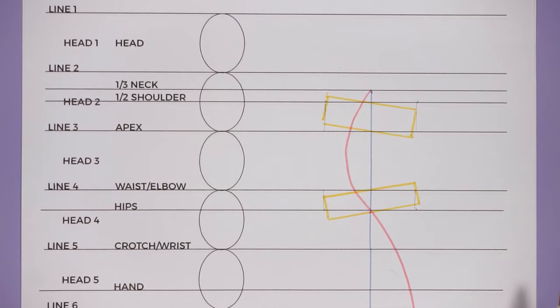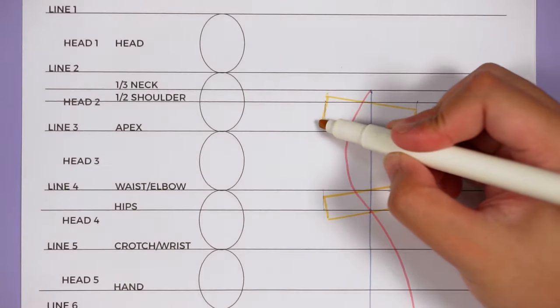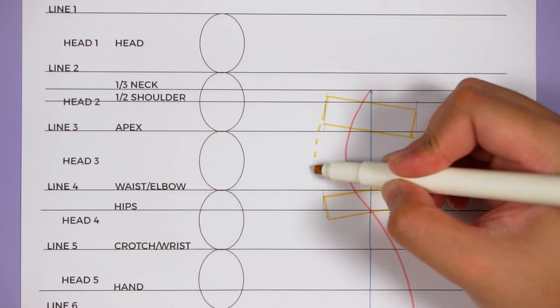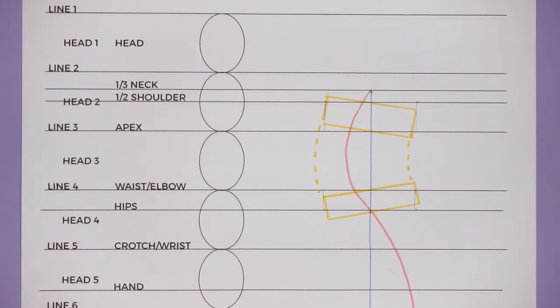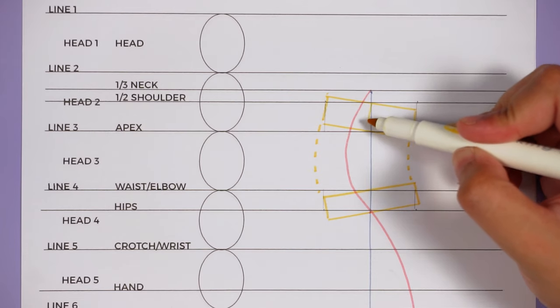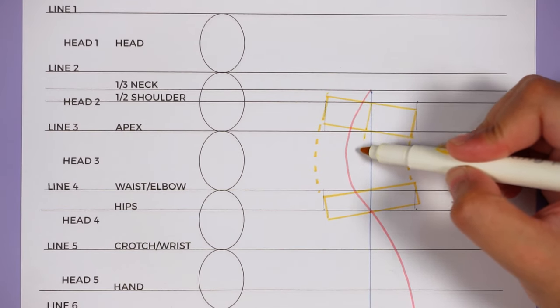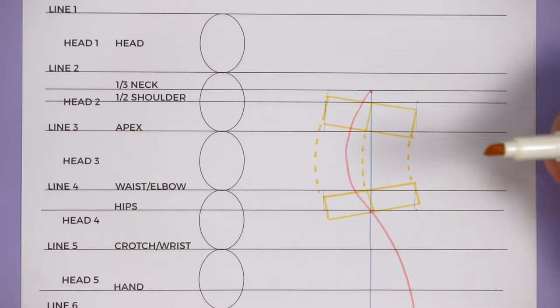From here we now have new shoulder, apex, waist, and hip lines which are represented in yellow. So these are the new guidelines that we will be using when drawing the figure in motion. We can also start by adding a center line to the torso just so it can help us later on with symmetry. Once we have drawn all of these lines, then we can start drawing the body parts.